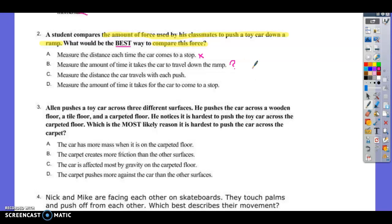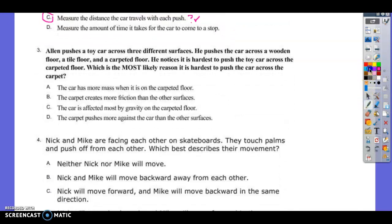People are saying no to this one. Measure the amount of time it takes the car to travel down the ramp. That's not a terrible answer, is it? Remember, we're looking for the best way, so you know they're going to throw a couple good answers in there. That one's maybe. I'm going to put a question mark. Measure the distance the car travels with each push. How far the car goes. I'm digging that one. I'm going to have to compare that to the other one, but I'm kind of liking that. Measure the amount of time it takes for the car to come to a stop. Again, I don't think that's a terrible answer, but what is our best answer? C. You guys think C? Check your answer. Look at the back. That's why I have those answers there, to check ourselves. What does the back say? Number two. C. C is the best answer. Do we all understand why C is the best answer?